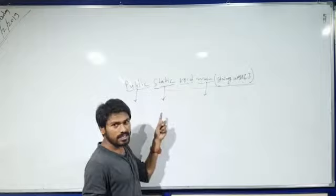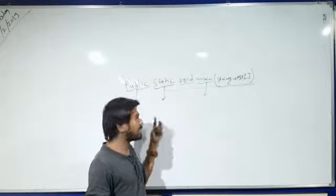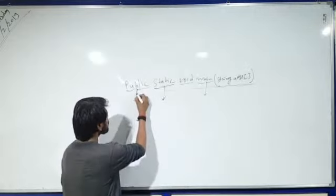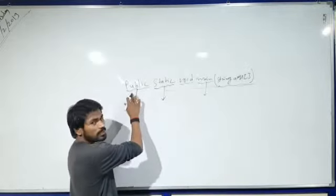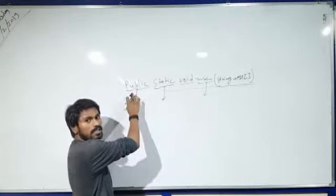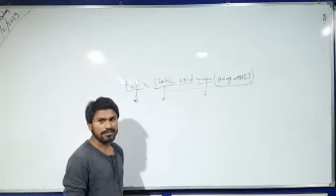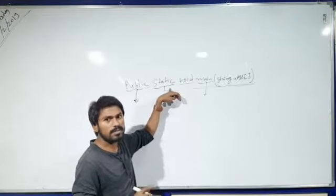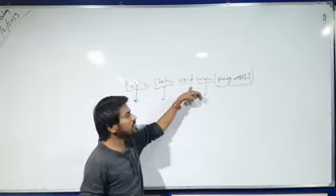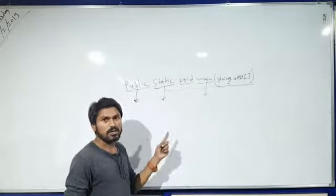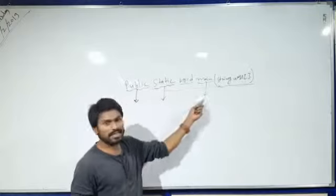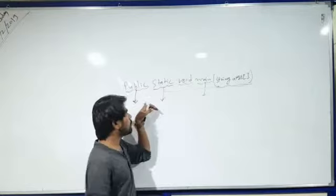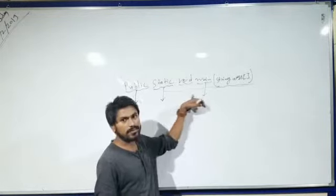So this is the main reason for why Java uses by default public static void main. I have told you: public means we can access from anywhere; static means we don't need to create an object of that method. So this is the main reason for using this format in Java. This is public static void main.